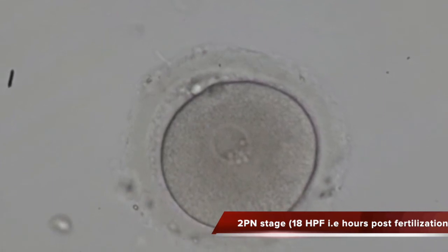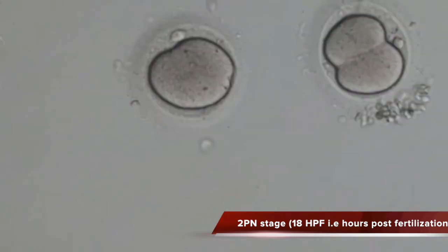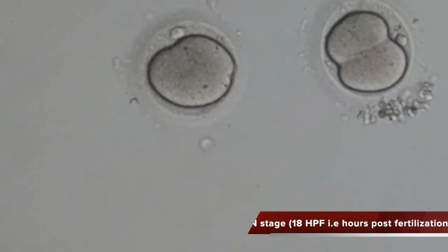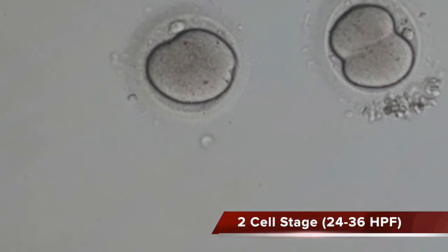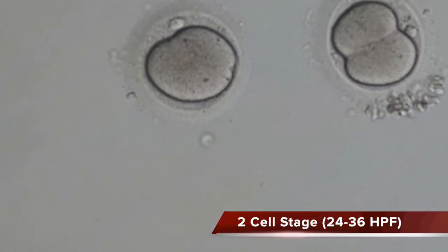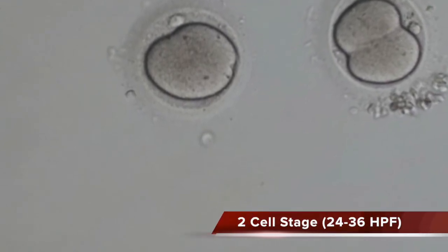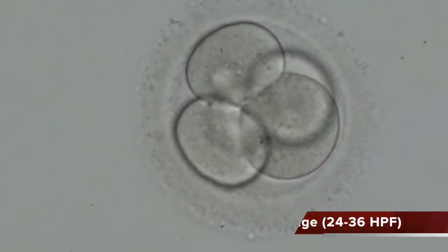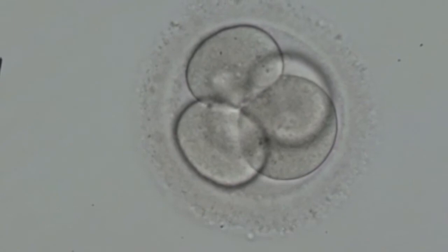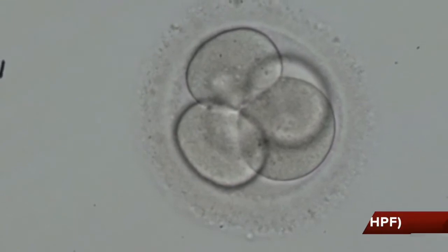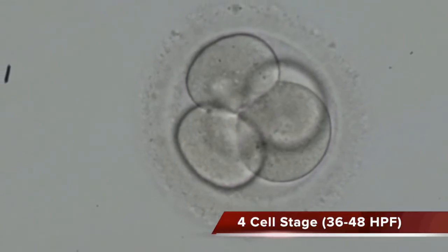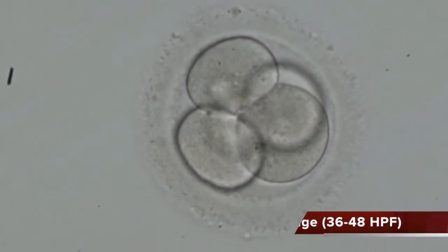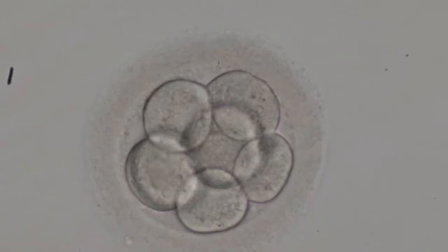The first stage of embryo development is known as the pro-nuclear stage, which takes place around 18 hours post-fertilization. The two-cell stage is seen after that. The four-cell stage takes place after 36 to 48 hours post-fertilization.